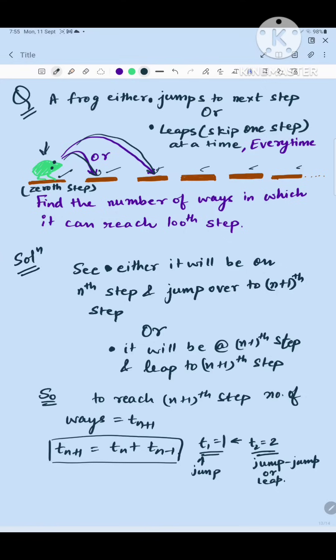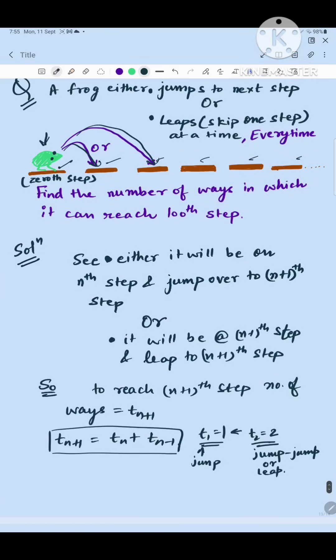So what we do is let's say there is an intermediate n+1th step. To land on this n+1th step there are t_{n+1} number of ways, and to land on the nth step there will be t_n number of ways. So if it has to land on the n+1th step, what will be its previous position? Either the frog will be on the nth step or it will be on the n-1th step. So either it will be on the nth step and it will jump or it will be on the n-1th step and it will leap.